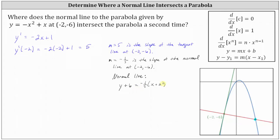Next we'll distribute negative one fifth: y plus six equals negative one fifth x minus two fifths. Then we subtract six on both sides. Simplifying, we have y equals negative one fifth x, and then negative two fifths minus six is equivalent to negative two fifths minus thirty fifths, which gives us negative thirty-two fifths. So the equation of the normal line in slope-intercept form is y equals negative one fifth x minus thirty-two fifths.